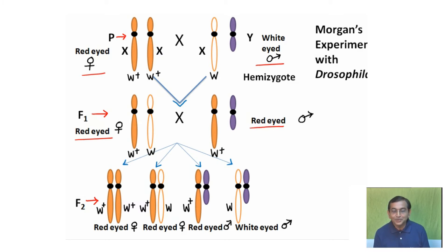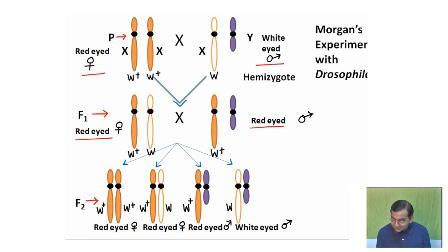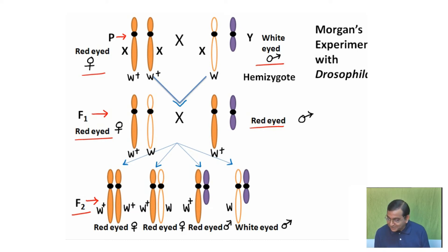He then intercrossed the red-eyed F1 female (X^W+ X^W) with a red-eyed male (X^W+ Y). In the F2 generation, he obtained red-eyed females, while among males, half were red-eyed and half were white-eyed. But all females were red-eyed.